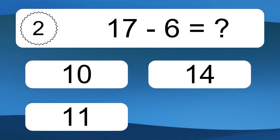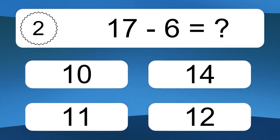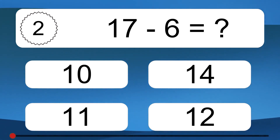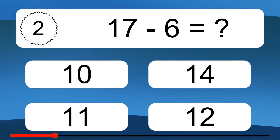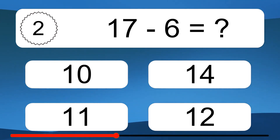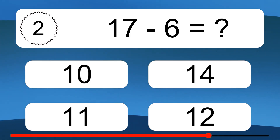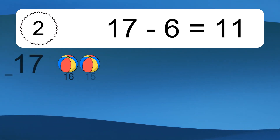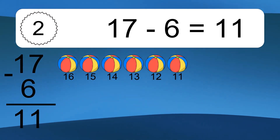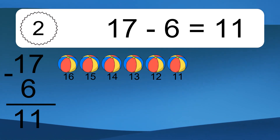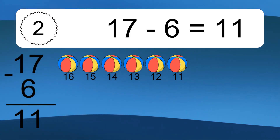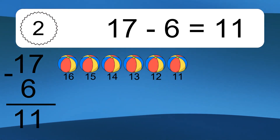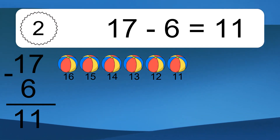17 minus 6 equals what? 17 minus 6 equals 11. Let's count it. 16, 15, 14, 13, 12, 11.